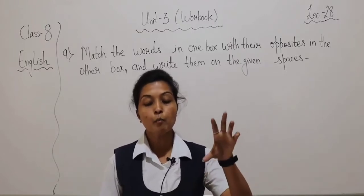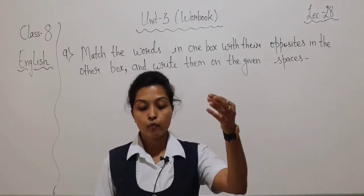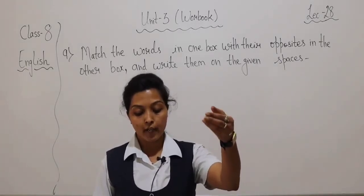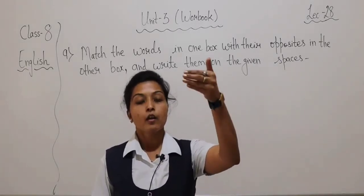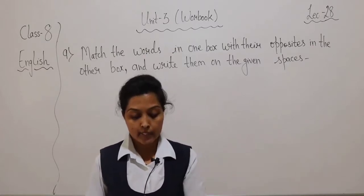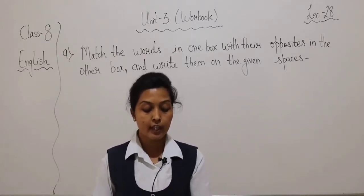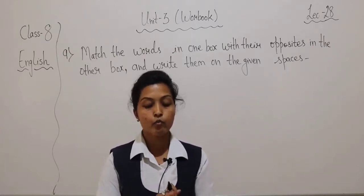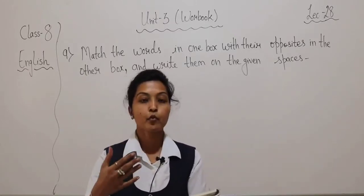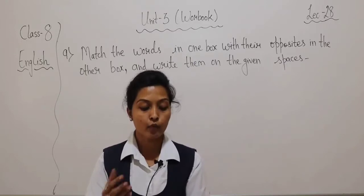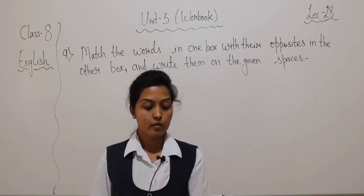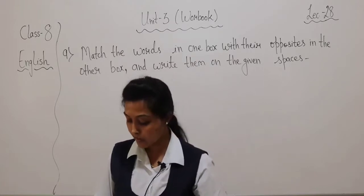We have two boxes. From the first box, whatever word we have, we match it with the opposite word. For example, the first word is win. We have to find the opposite of win — that is lose. So it is given.